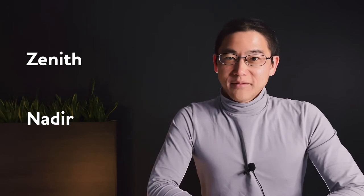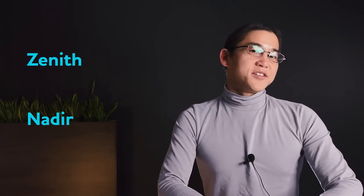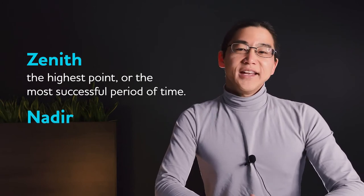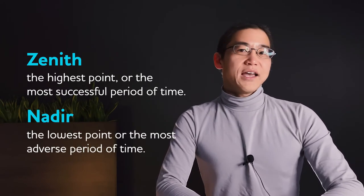Next, we have the word nadir. Nadir is the opposite of zenith, which is also an Arabic word. Zenith means the highest point or the most successful time, whereas nadir is the lowest point, or the most adverse time. Think of phrases such as all-time low or rock bottom.